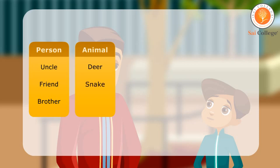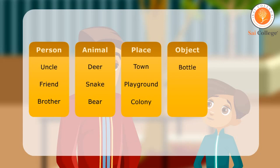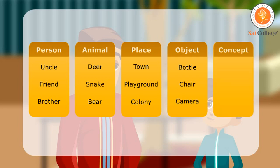Here is a list of nouns by category. Animal: deer, snake, bear. Place: town, playground, colony. Object: bottle, chair, camera. Concept: bravery, excellence, happiness.